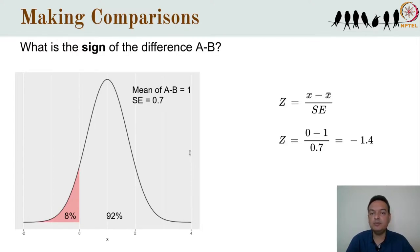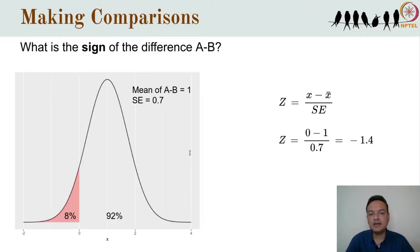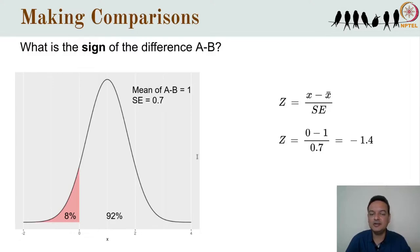If that happens, the error we would be making is an error in sign — where the sign of the difference is actually negative rather than positive. This is known as a type S error, where S stands for sign. In this case the probability of committing type S error is 8%. Because that probability is small, we are pretty confident that A is greater than B. Note that type S error denotes a mistake in our conclusion, which is different from the word 'error' in standard error, which denotes variation or precision rather than mistake.